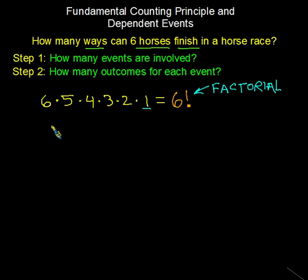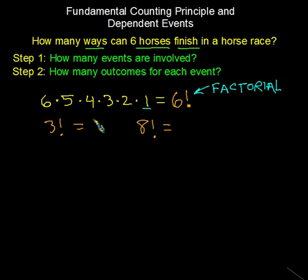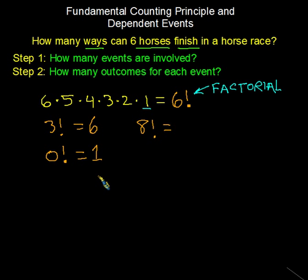There's also a special case for factorials that may come up in another video. Three factorial equals three times two times one, which is six. I'll leave six factorial and eight factorial for you to calculate. There's one you might not be able to guess: zero factorial. It's going to come up in a future lesson, and it turns out that zero factorial, strangely, equals one. There are good reasons for that which I may explain in class.